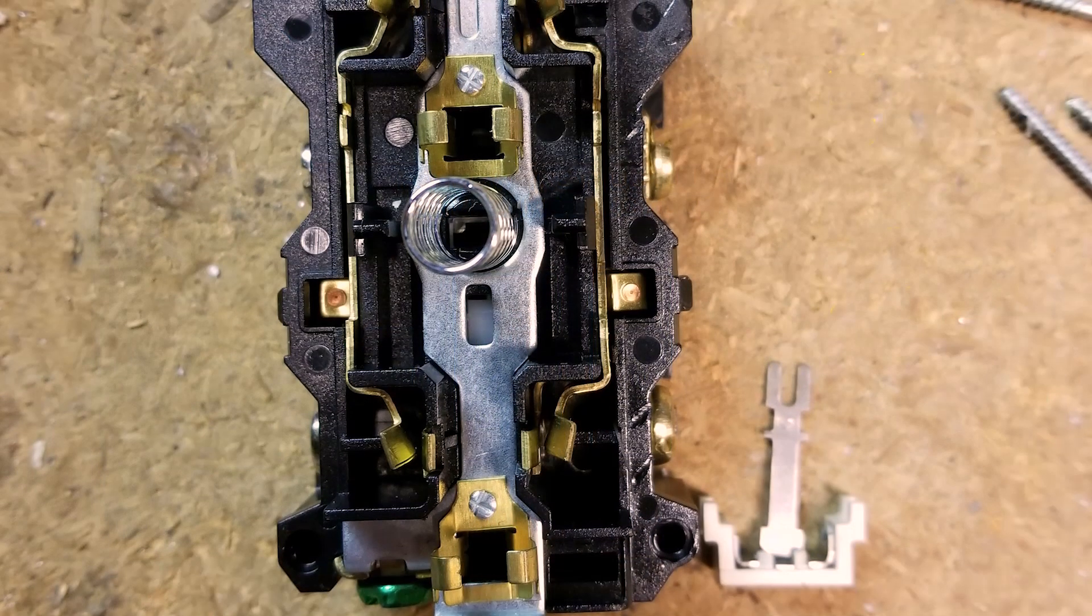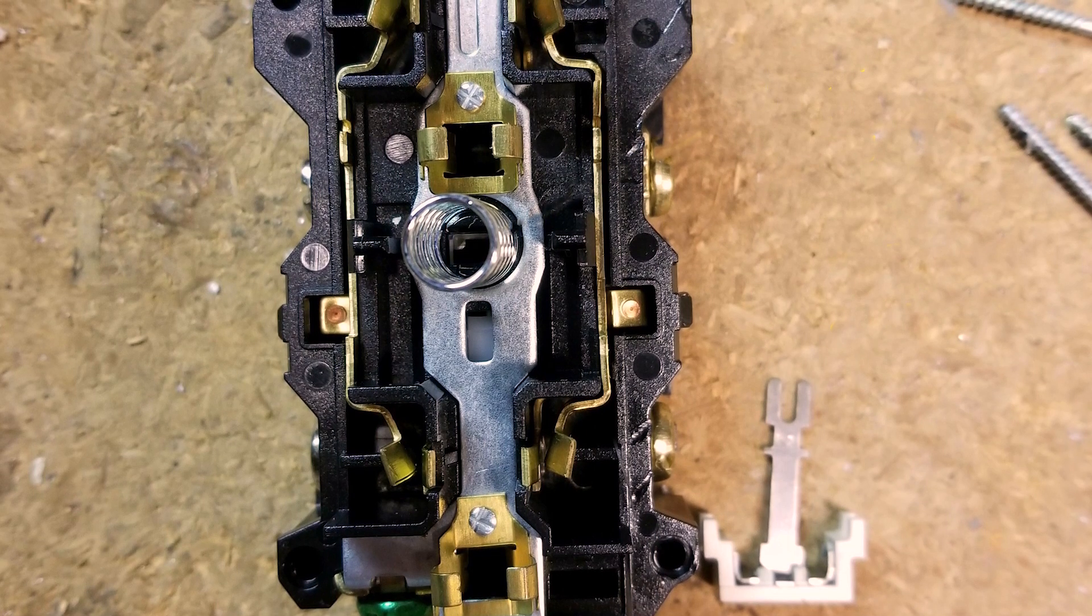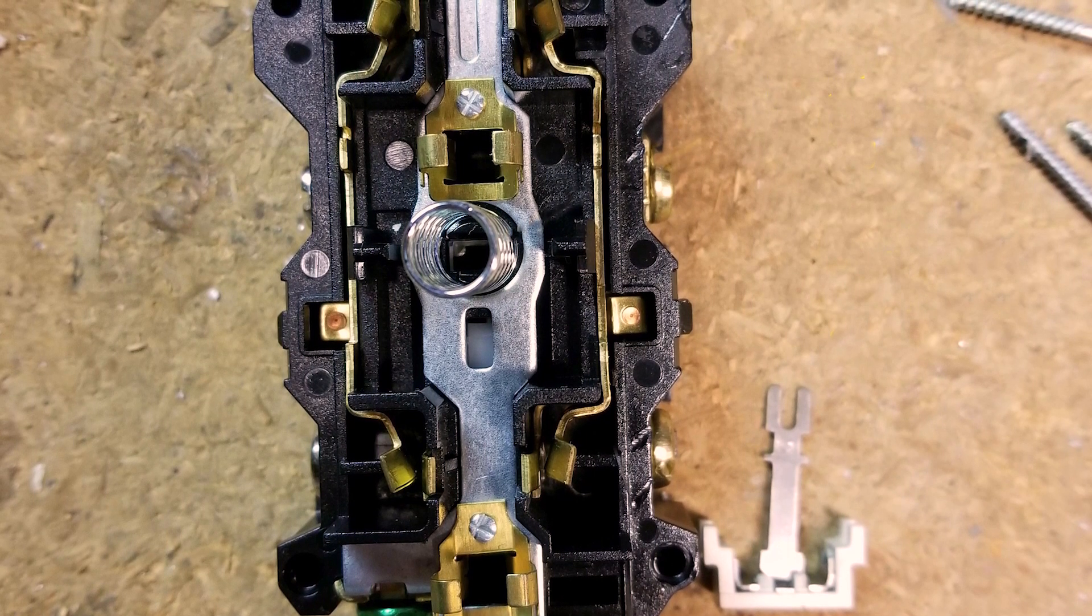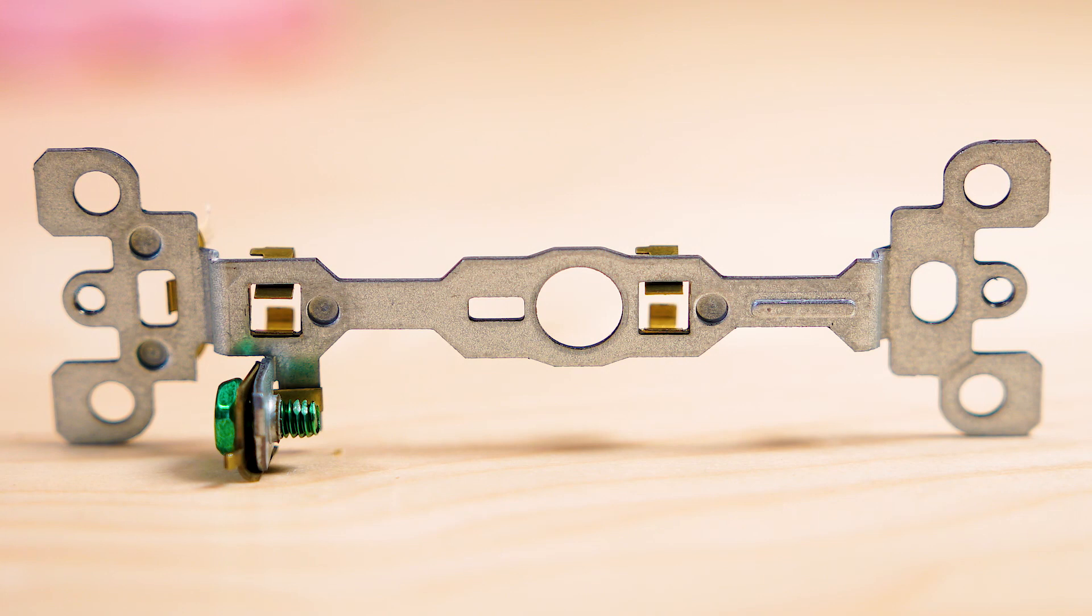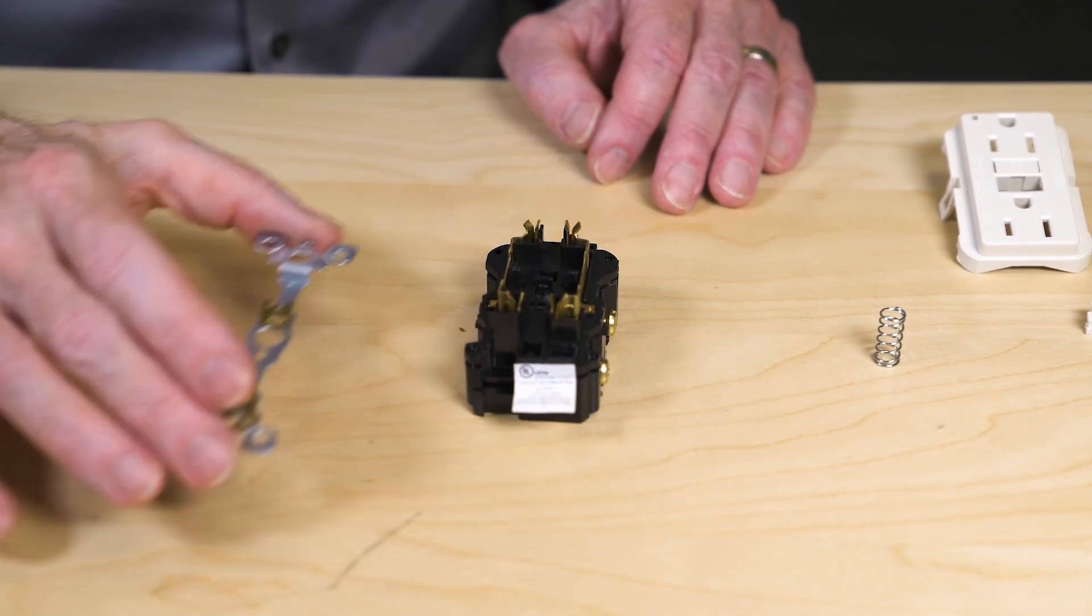The plastic reset switch lifts off to reveal a spring behind it and the mechanism that pushes the electromechanical switches back into position after an actuation. The metal frame containing the attachment points and the third wire ground connections then lifts off the plastic housing.